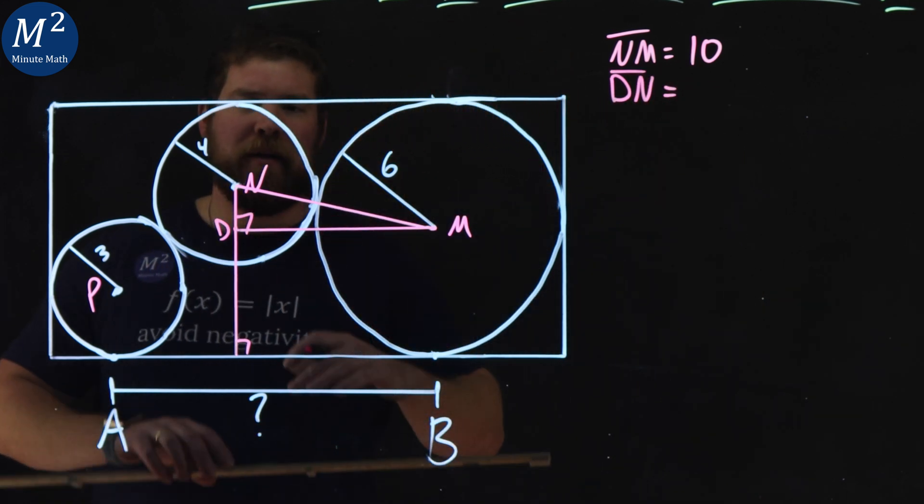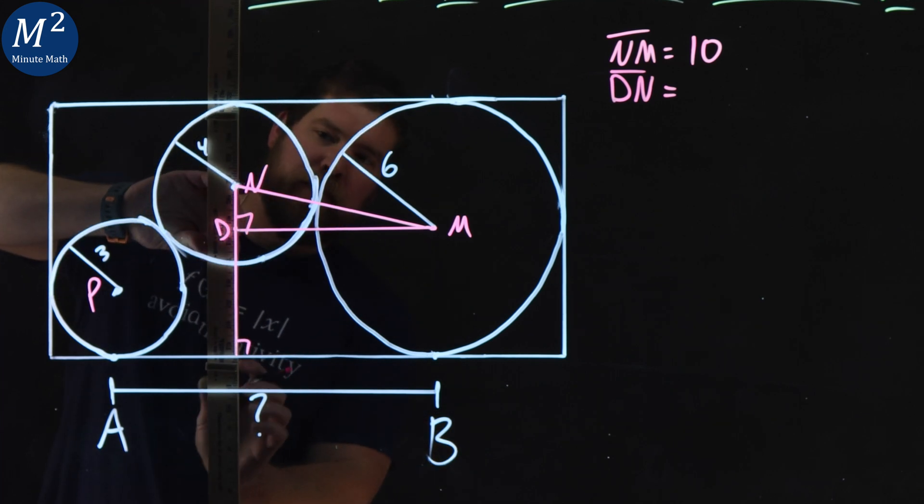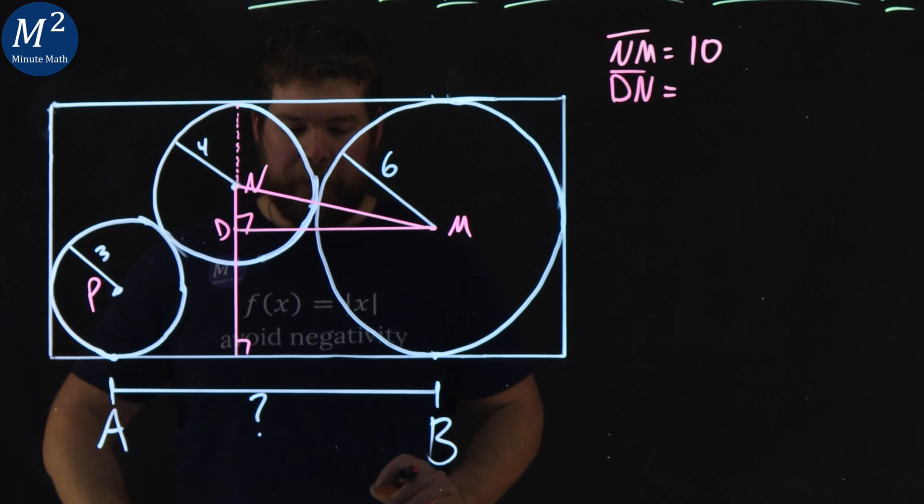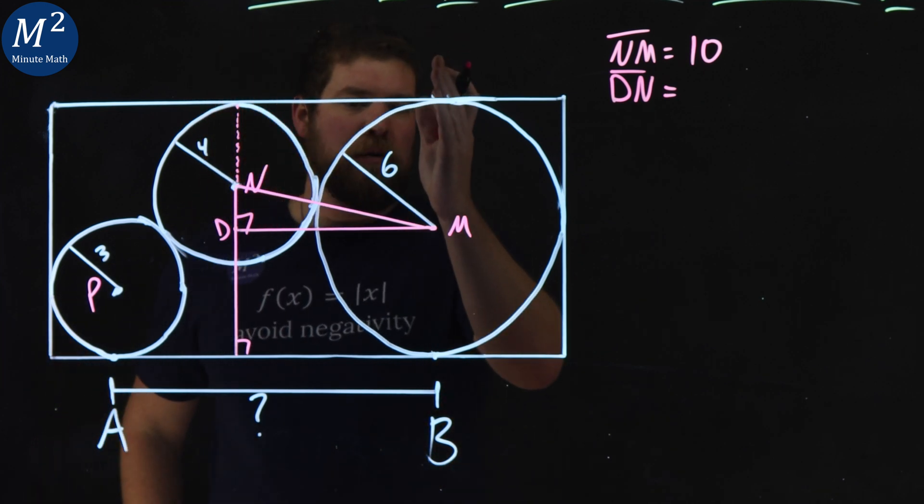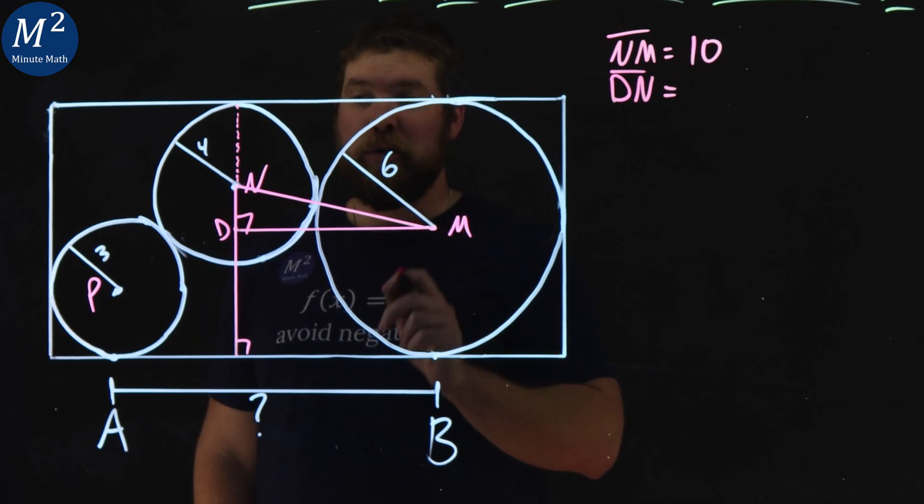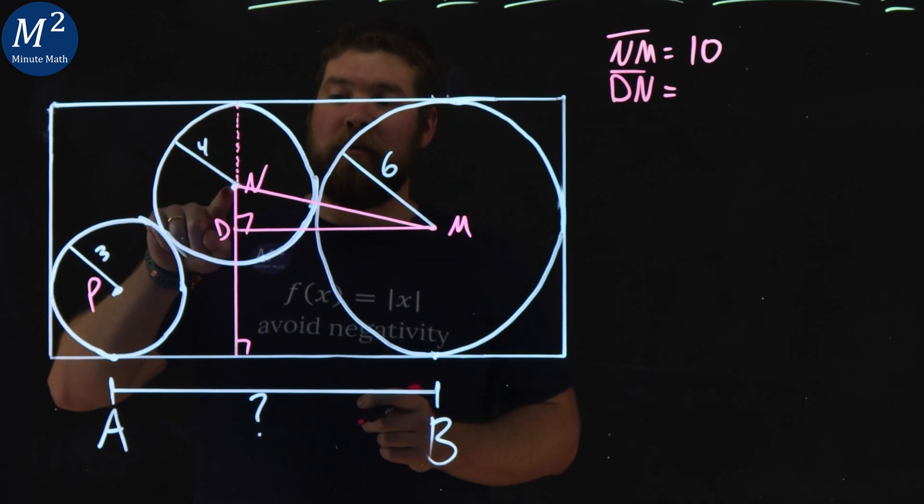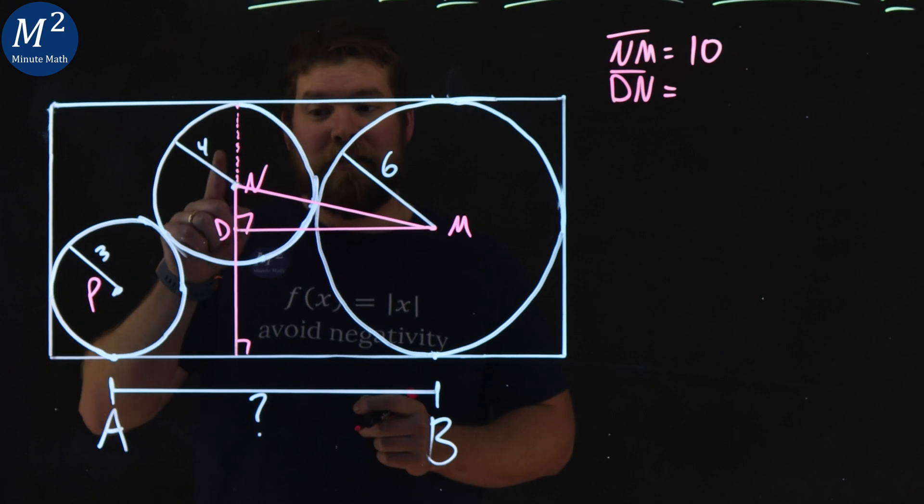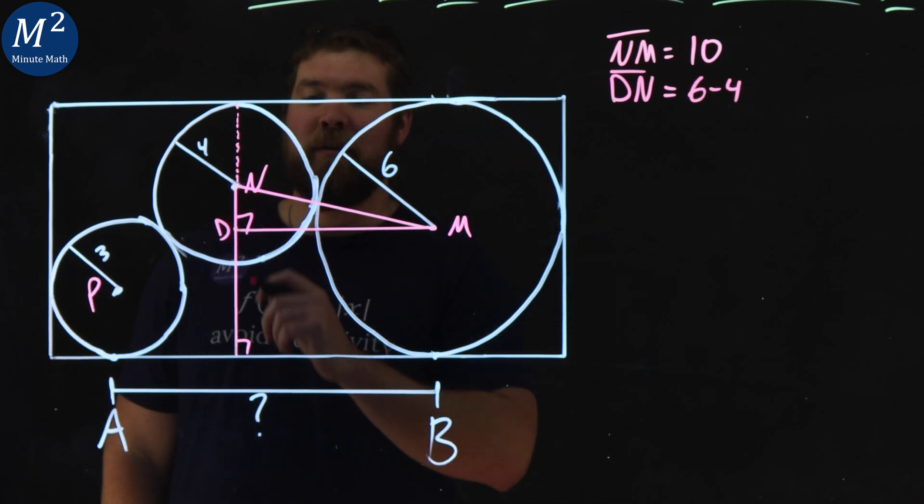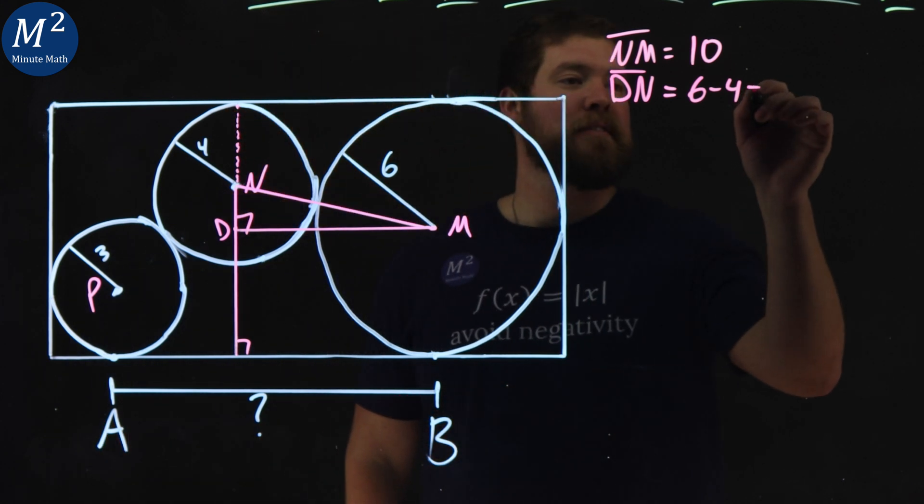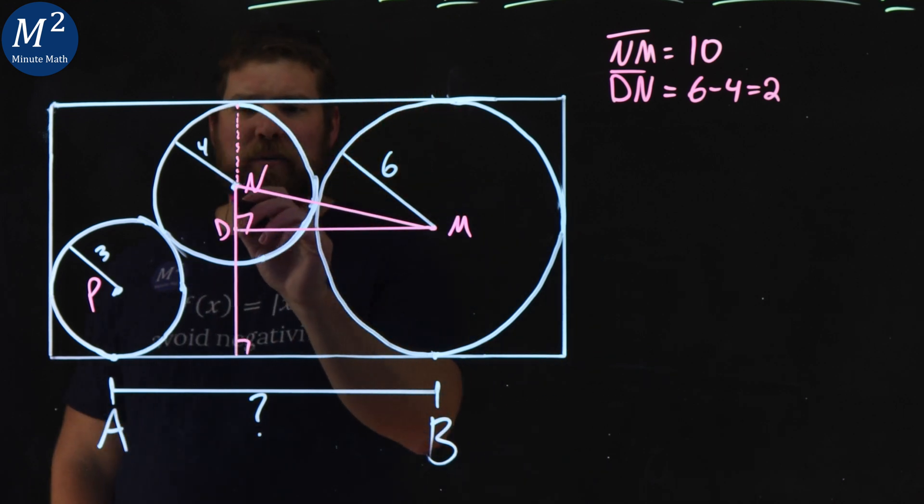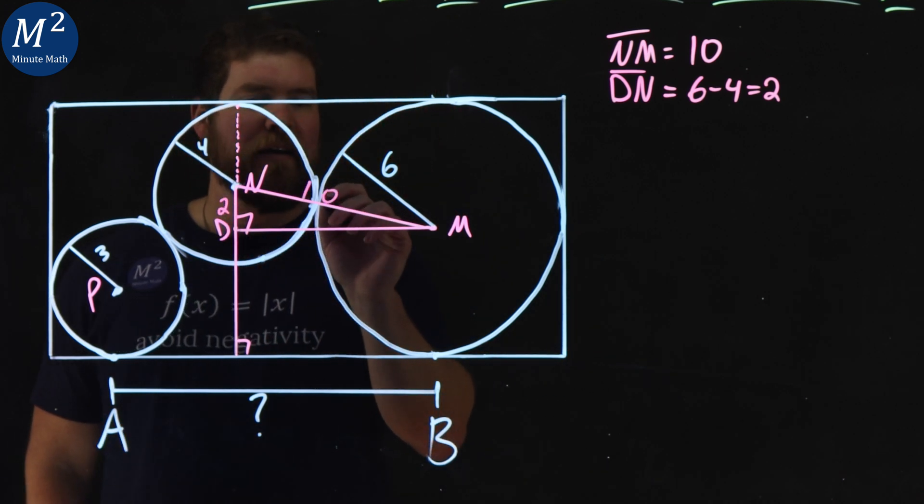Well, to do that, if I continue this line, it might be a little easier to see. I'm going to get dotted here. If we notice, this vertical line here from M up to the top has a radius of 6, so that's 6 units. Down here to this center of the circle is 4 units, because that's the radius, and 6 minus 4 gives me a length of ND, which is 2. So now we've got the length of DN. We've got a 2 here, and we've got a 10 here.